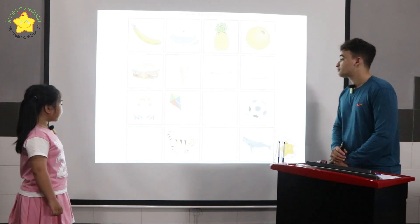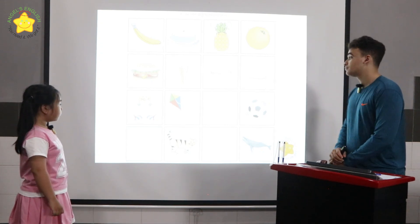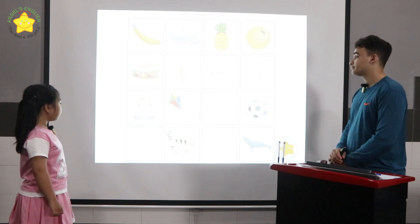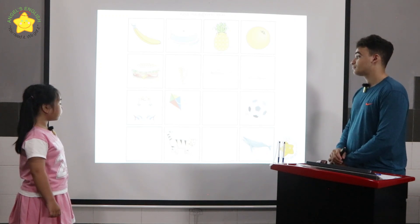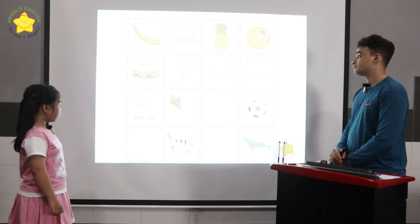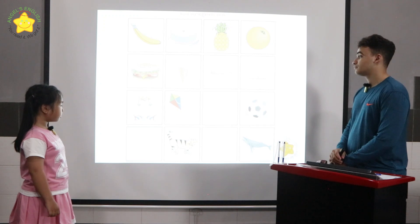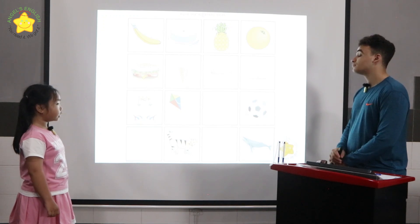In row three, the glass of water is different because the door, the kite, and the ball are toys. In row four, the cat is different because the dolphin, the shark, and the whale live in the sea.